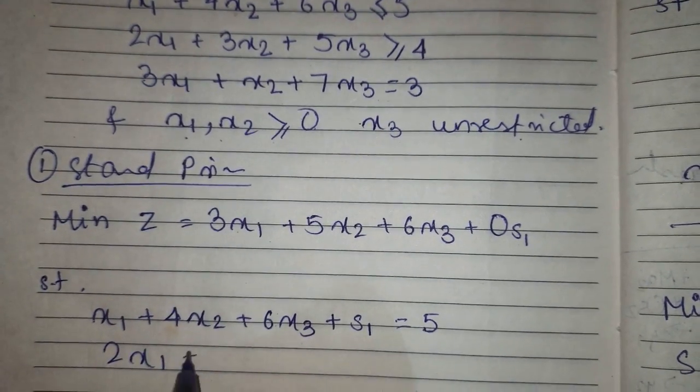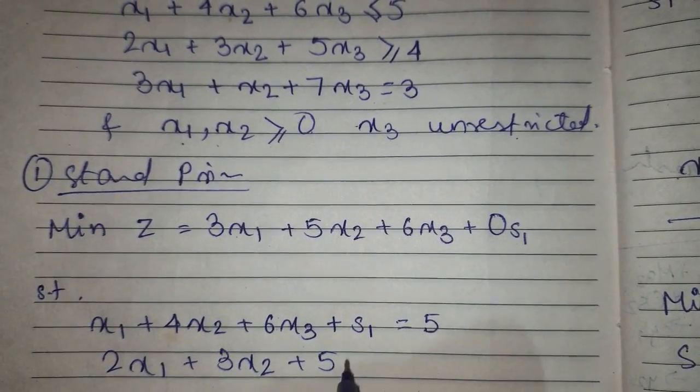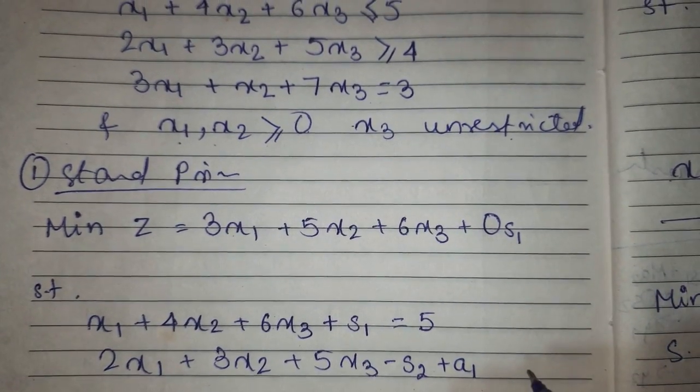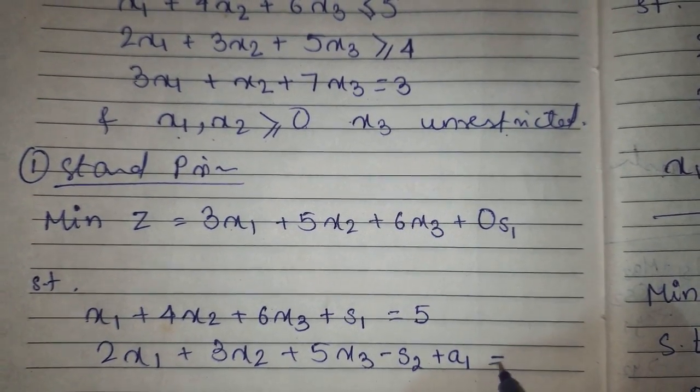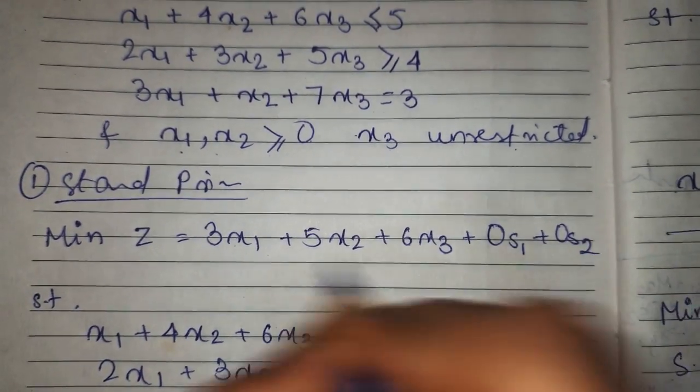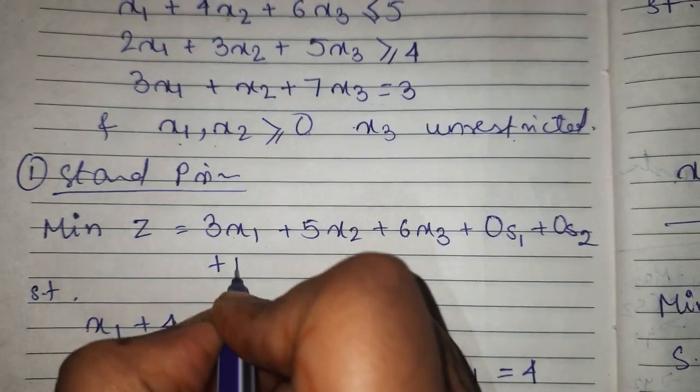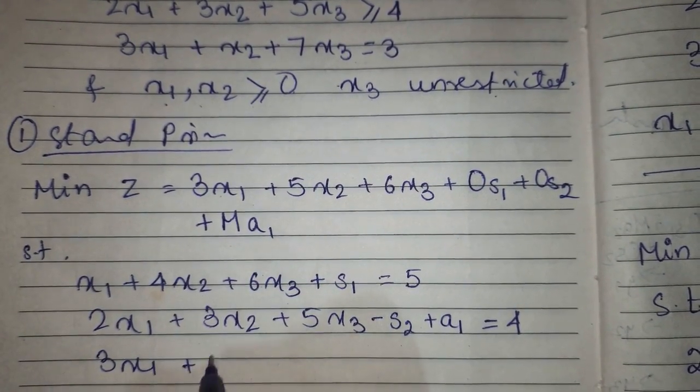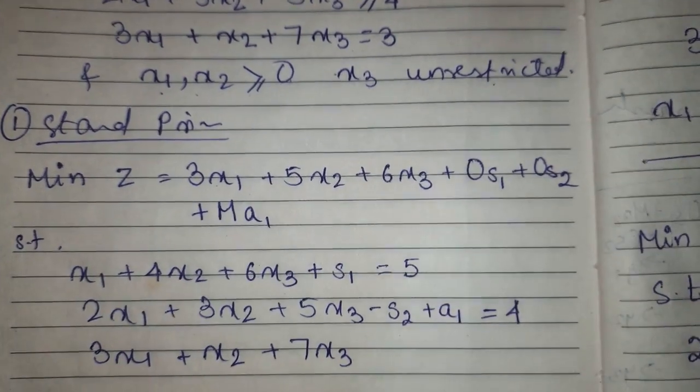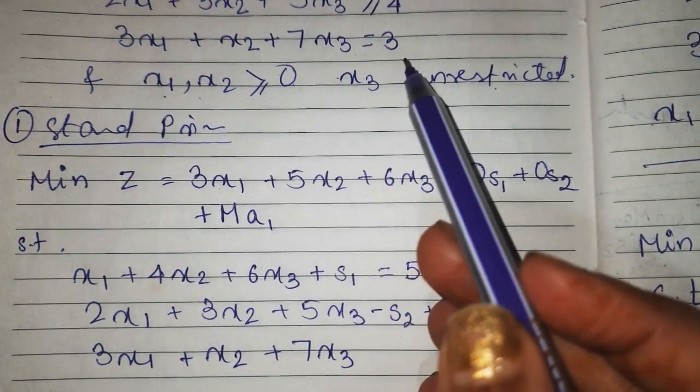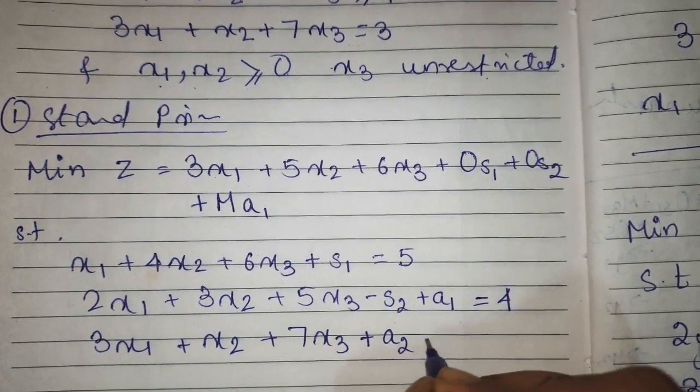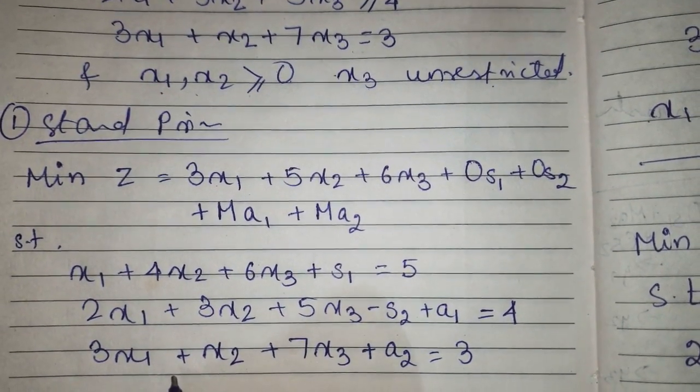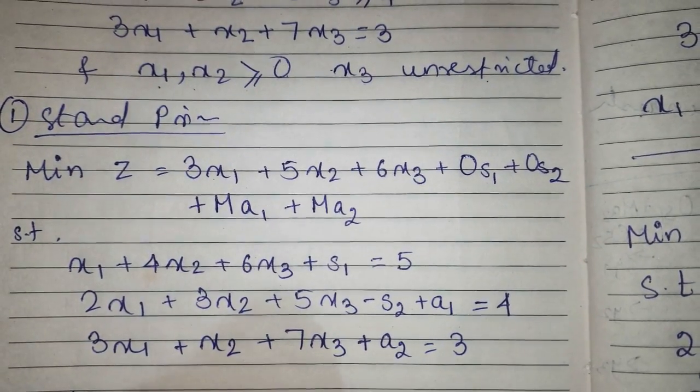Second constraint: 2x1 plus 3x2 plus 5x3 minus s2 plus a1 according to the big M method equals to 4, plus 0s2. Minimization, therefore plus M a1. Next third constraint: 3x1 plus x2 plus 7x3, here it is given equal to, means only plus a2 equals to 3, plus M a2.